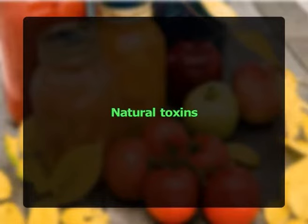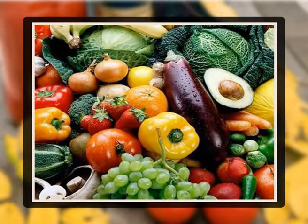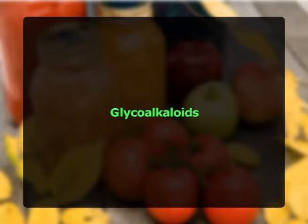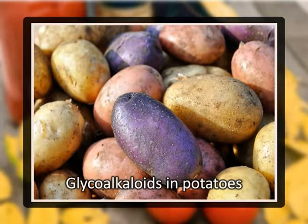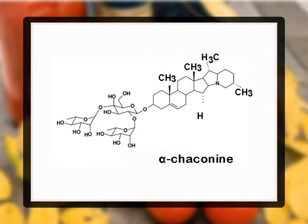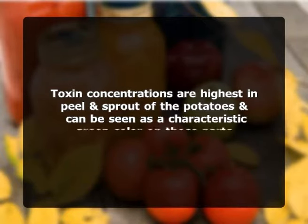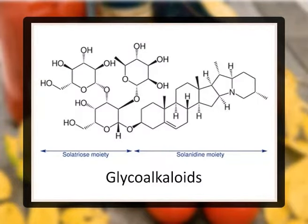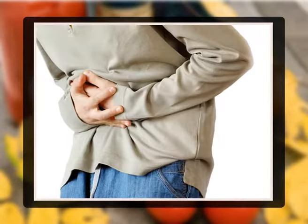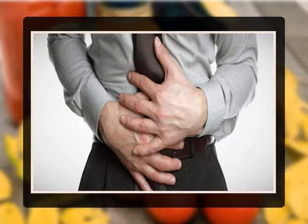The second class of chemical toxins is natural toxins — biochemical compounds produced by plants in response to certain conditions or stresses, which include glycoalkaloids. Potatoes can contain natural toxins called glycoalkaloids; the major ones found in potatoes are alpha-solanine and alpha-chaconine. These toxins are formed in response to stresses such as UV light and damage such as bruising, and cannot be destroyed by cooking. Toxin concentrations are highest in the peel and sprout of potatoes, visible as a characteristic green color. Exposure can cause acute toxic effects such as burning in the mouth, diarrhea, severe stomach ache, vomiting, and gastrointestinal irritation.